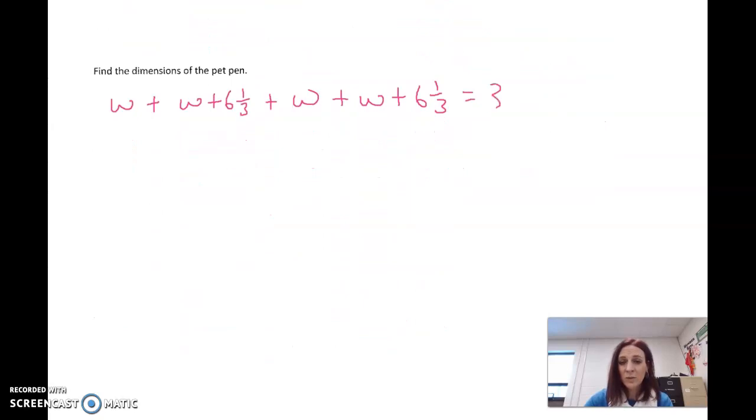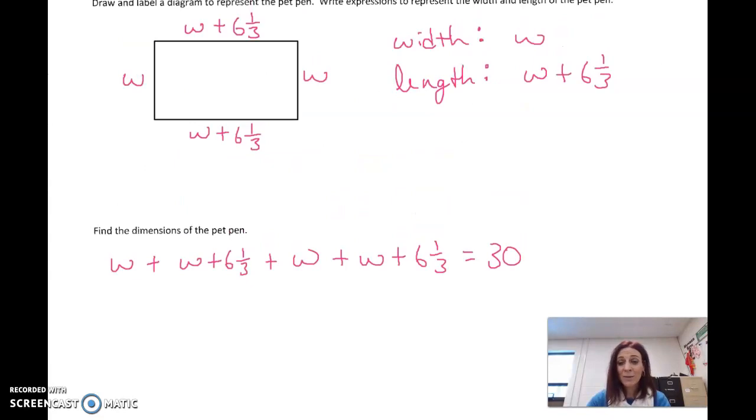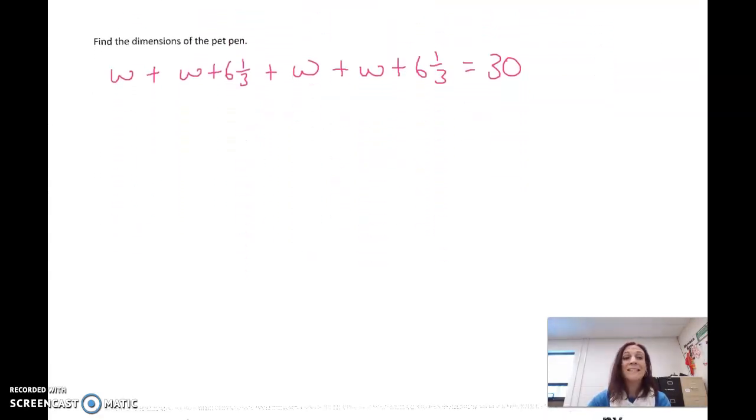So I'm just going to go around here: W plus W plus six and a third, that's the length there, plus this W plus this bottom here, W plus six and a third. And we know that has to equal all the way around the perimeter there, 30 feet. So it seems really confusing, but remember, this is a width and this is a width, this is the top in my picture and that's the bottom. I just went around and added them all up. That's what's nice about a drawing. Now let's simplify this equation.